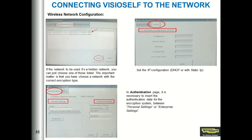Very similar to what we have done with the wired network, we can configure also the wireless network. To do that, we have to select the label 'Wireless Network Settings.' Once we are in, the VisioSelf will show in this mask all the available wireless networks. If the one I want to connect to is hidden, we don't have to worry — we just have to press connect, and the mask that will open allows me to enter the name of the hidden network, called SSID, the type of authentication, and username and password for the connection.